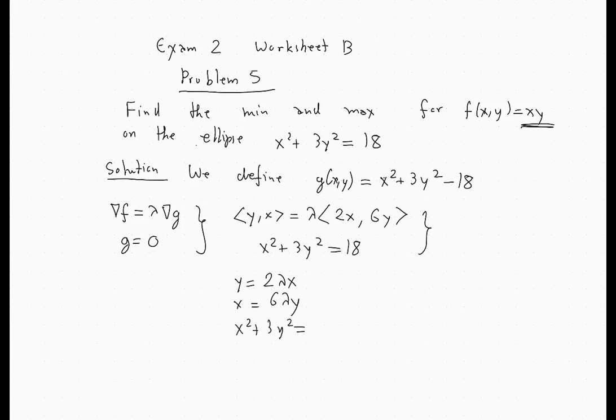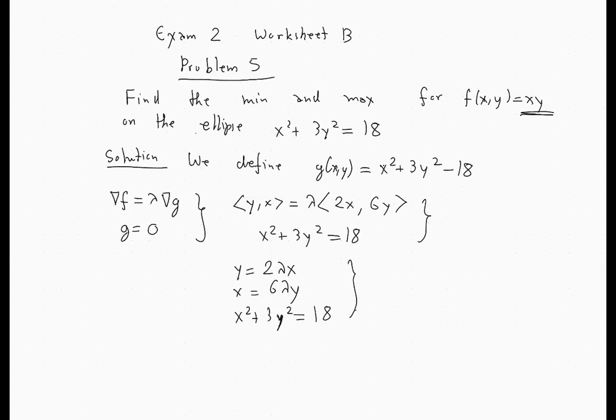And here, we should make the remark that x, y, and lambda cannot be zero. Why not? So if x were zero, then the first equation tells you that y is zero. And that's impossible because of the constraint. Not possible because you cannot have 0² + 3·0² = 18.